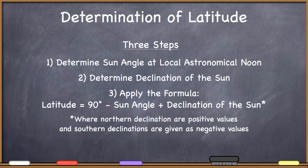When entering the declination of the sun into this equation, northern declinations are given positive values and southern declinations are given as negative values. So if the declination of the sun is 10 degrees south, you enter it as negative 10. If it's 12 degrees north, you enter it as positive 12. So: latitude equals 90 minus the sun angle plus the declination of the sun on that particular day. We'll use this equation in a few practice problems next.